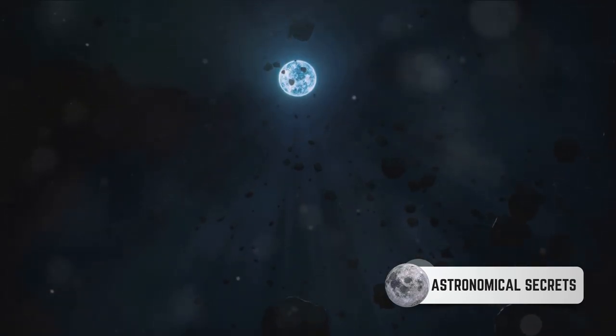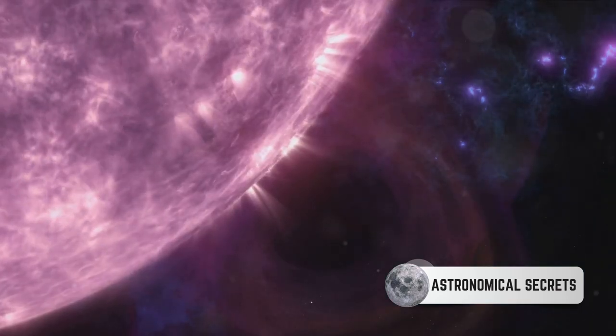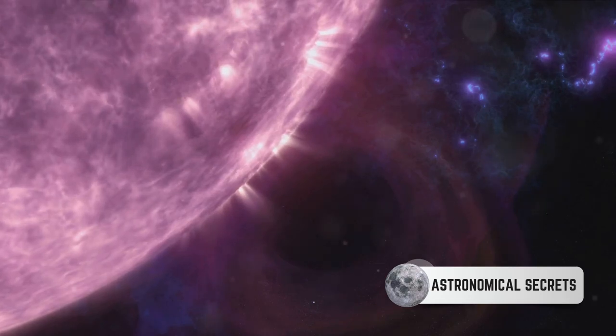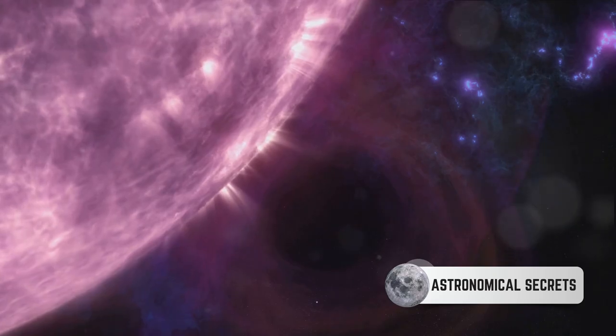This core, or white dwarf as it is commonly known, is incredibly hot, often reaching temperatures of hundreds of thousands of degrees. However, it's no longer undergoing nuclear fusion. It's essentially a stellar remnant, left to cool and darken over the course of billions of years.